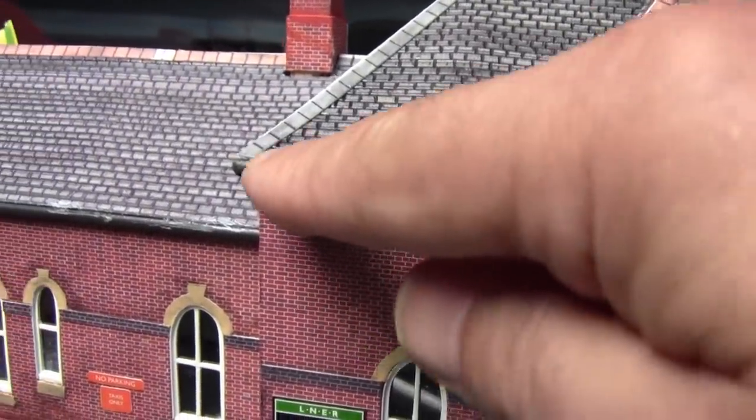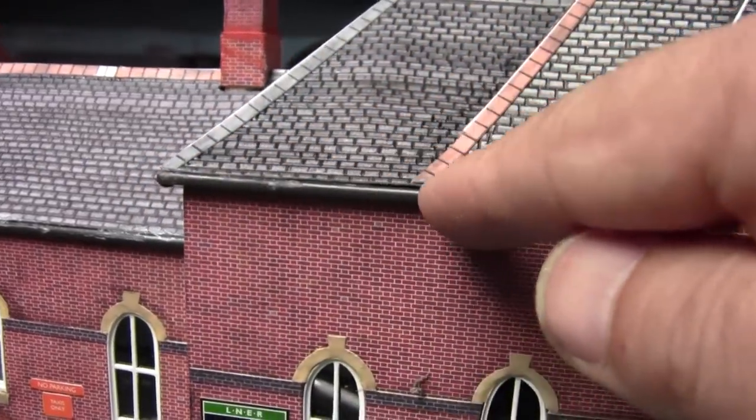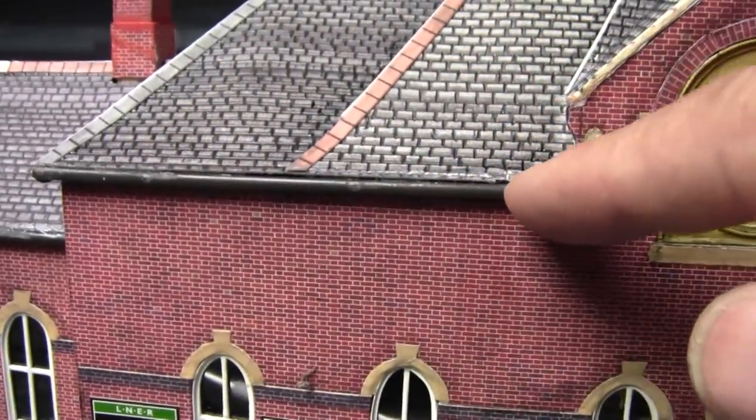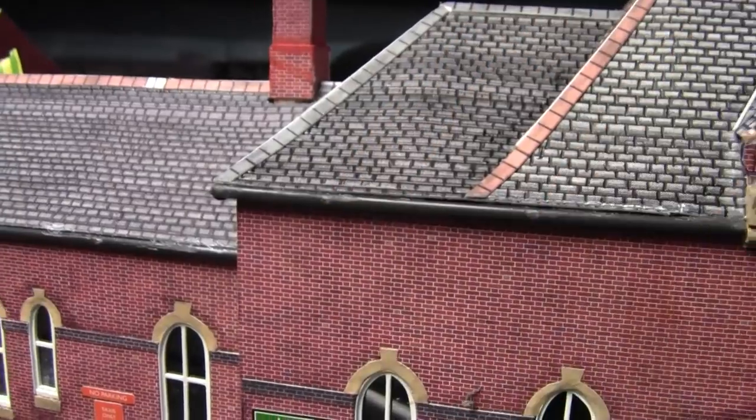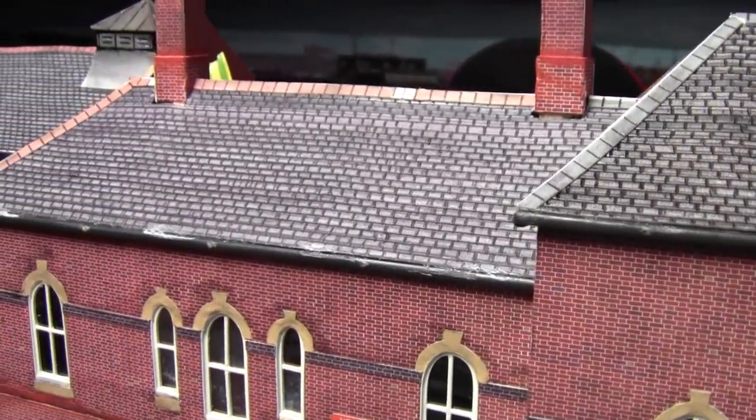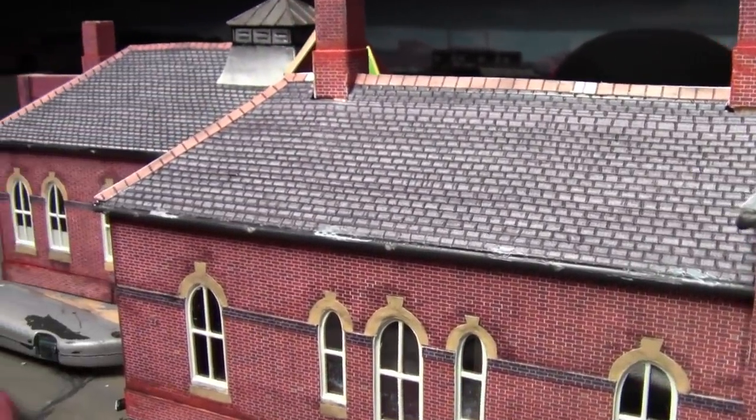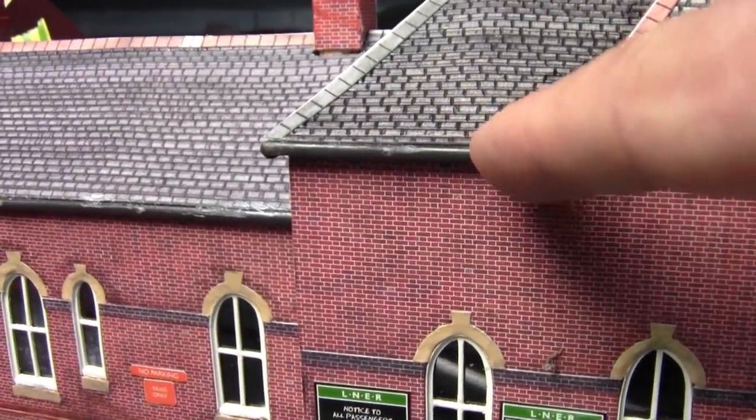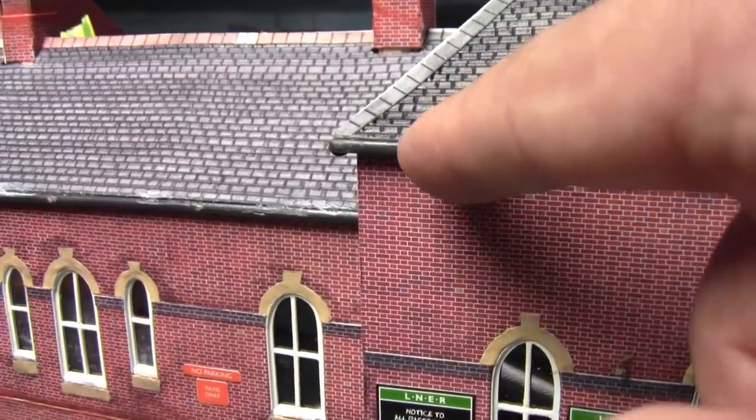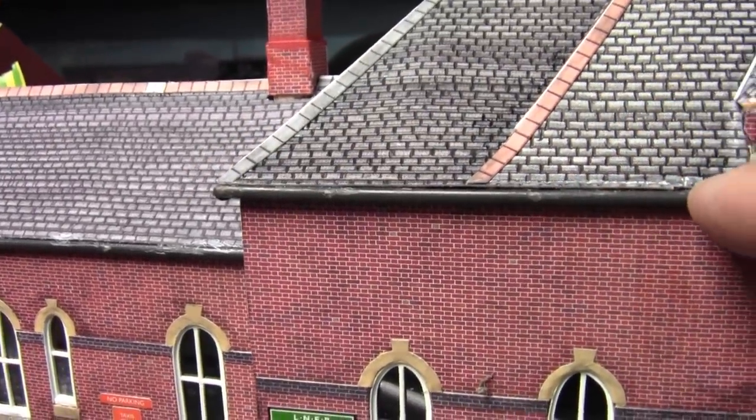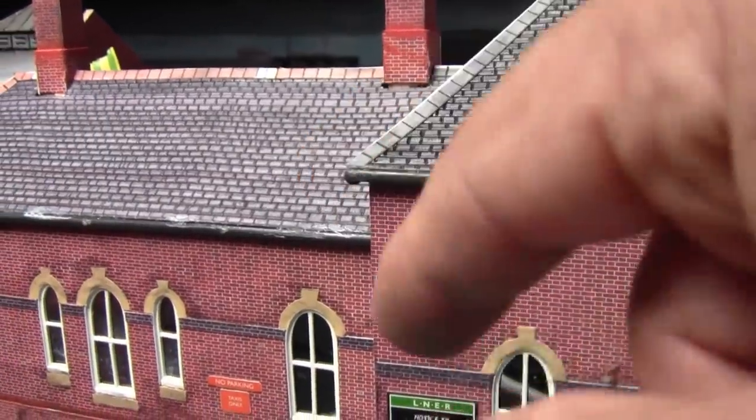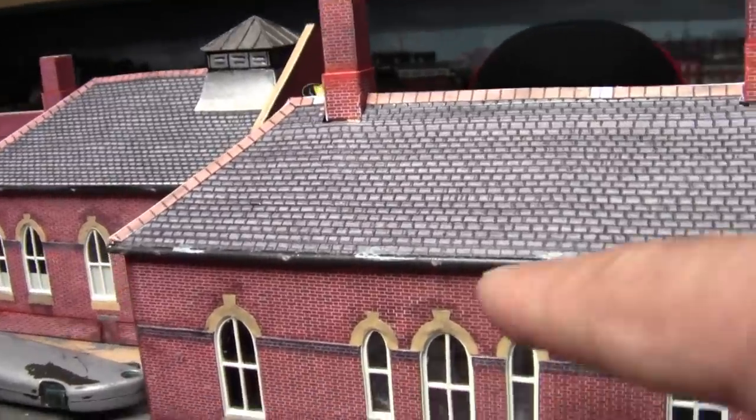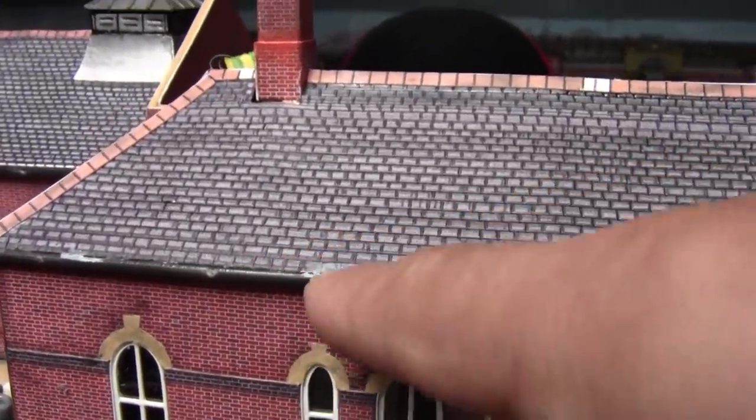All I'm doing now is just going around sanding off any bits of glue along this edge, so when I come to paint it, it'll be nice and smooth, but still trying to keep that little edge on because that would represent the guttering.